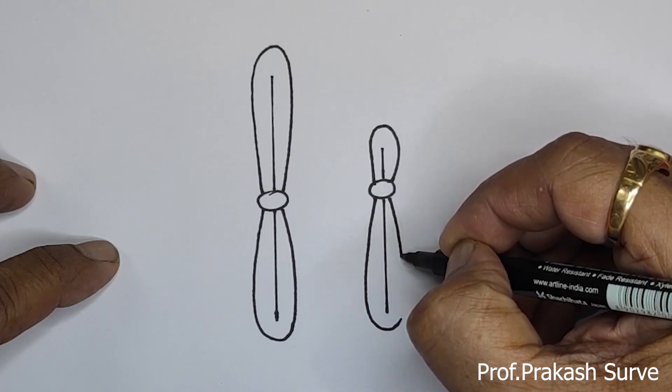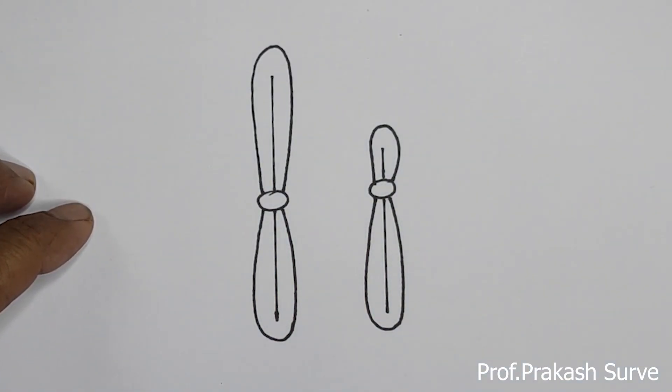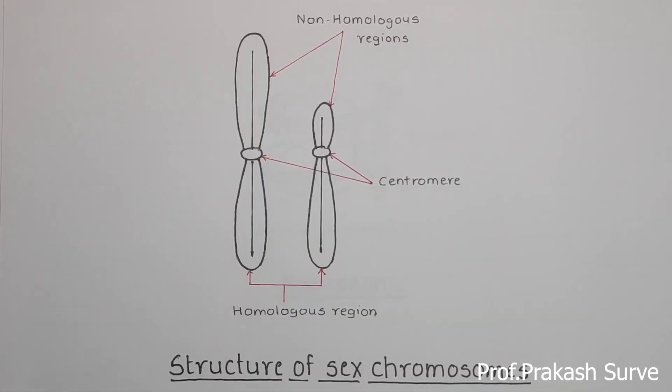This diagram is very important, may come for two marks. So this is what we have finished this diagram. And now label all the parts, this very important diagram.